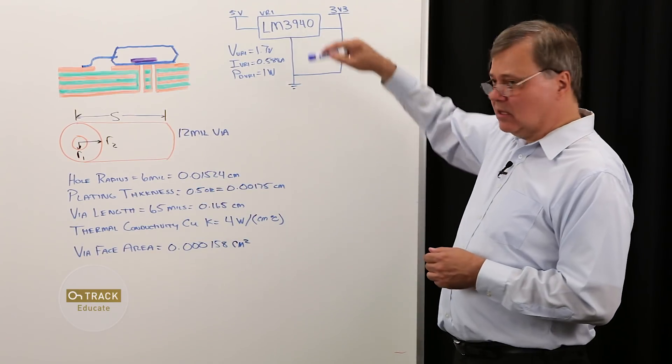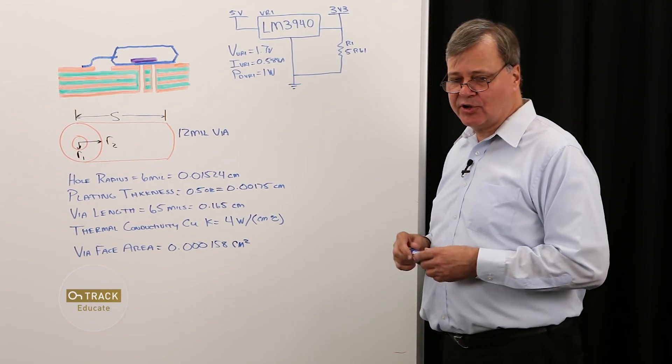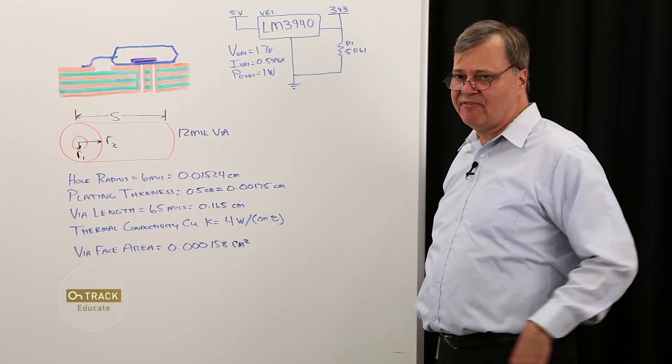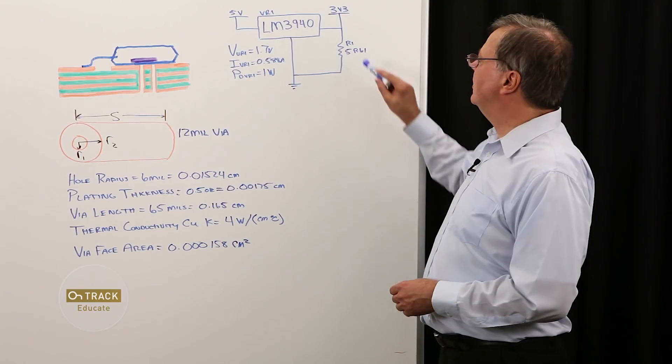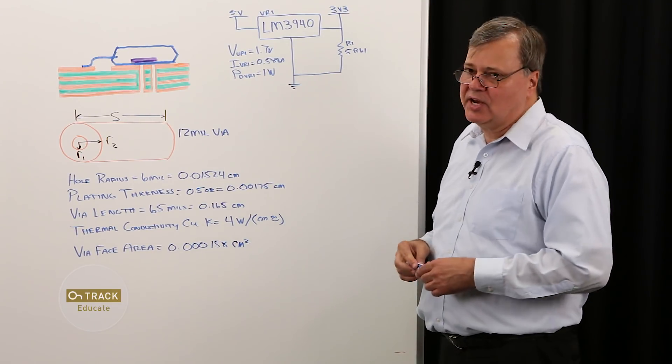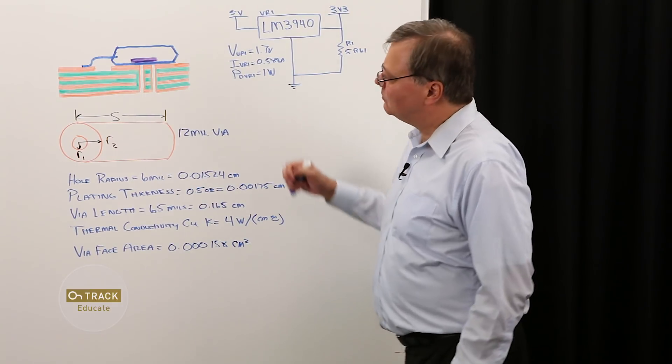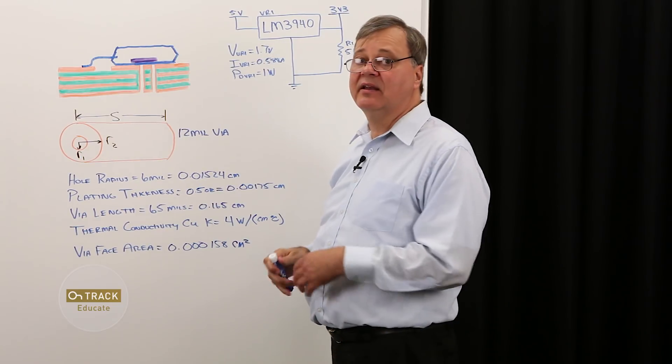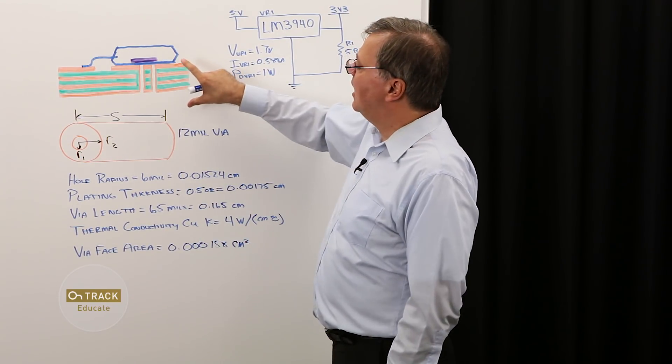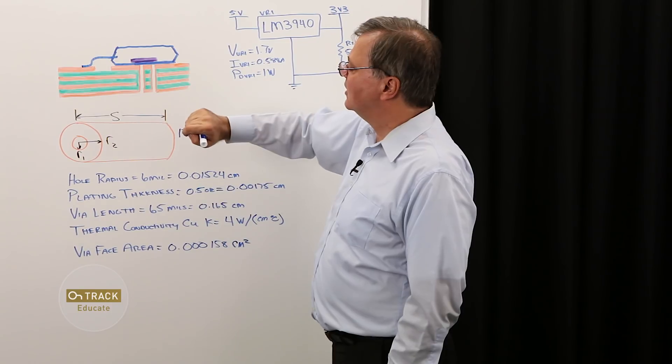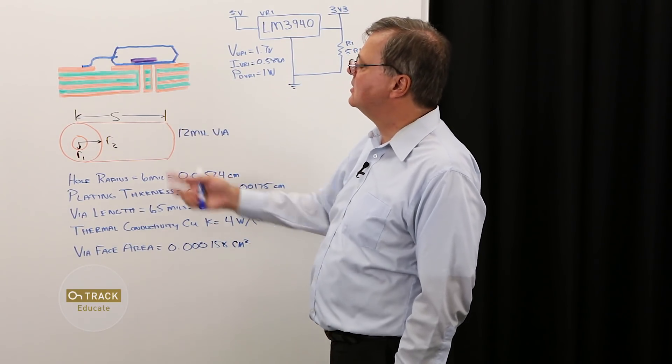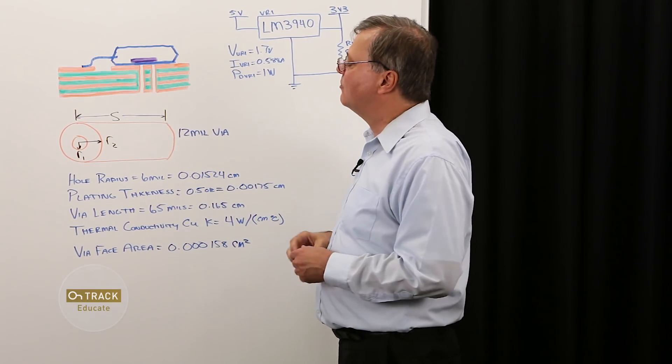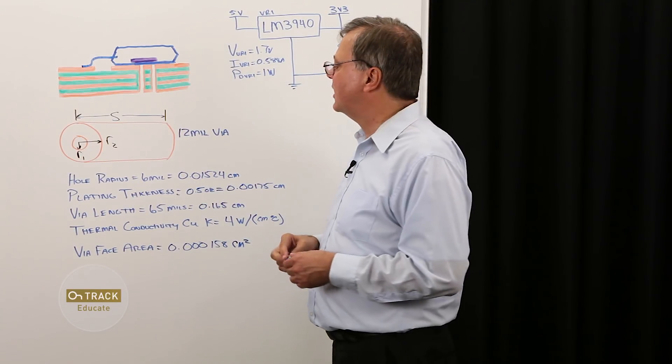So here's our little linear regulator circuit that we developed in our last episode. It's a 3.3 volt regulator being sourced with 5 volts. We've cleverly chosen the load so that the power dissipation in the regulator is 1 watt. Here is the component mounted on the circuit board. This would be representative of something like a D-pack, so this would be soldered directly to the board. Then we have some thermal vias conducting the heat to the secondary side of the board, and we'll talk about the radiated heat from there, and then we'll look at a heat sinking application as well.